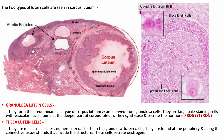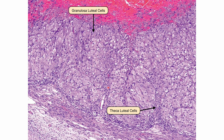There are two types of luteal cells. The granulosa luteal cells are predominant, derived from granulosa cells, and appear as large pale-staining cells with vesicular nuclei found deep in the corpus luteum; they synthesize and secrete progesterone. The theca luteal cells are smaller, less numerous, and slightly more darkly stained; they are located along the periphery and along the connective tissue strands that invade the structure, and they secrete estrogen.